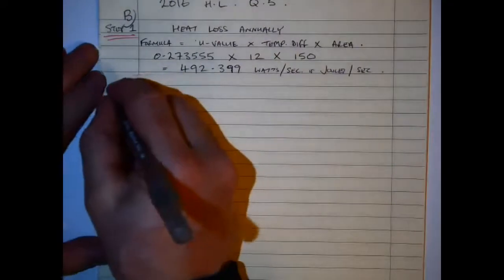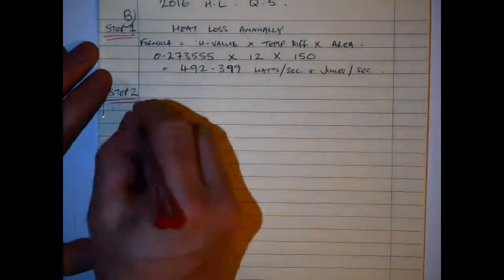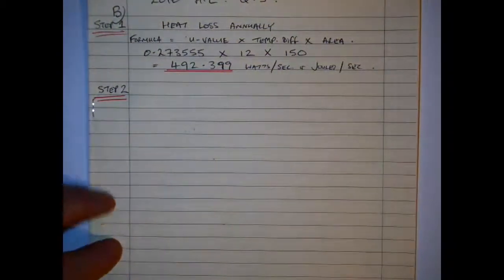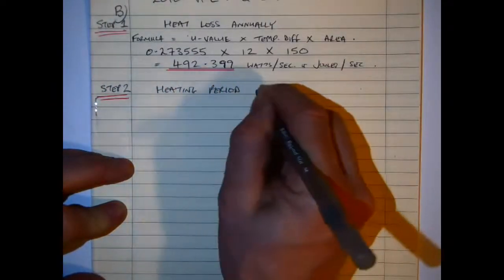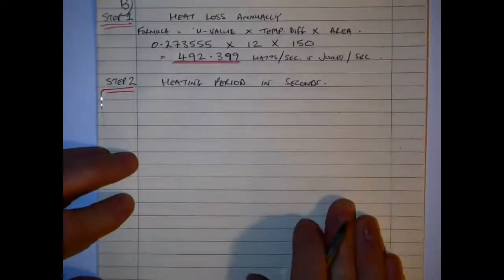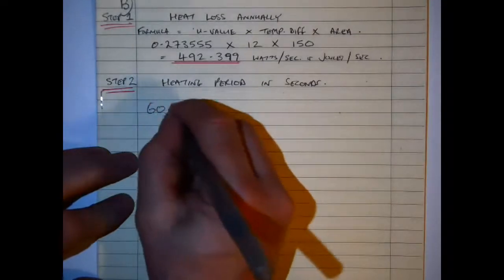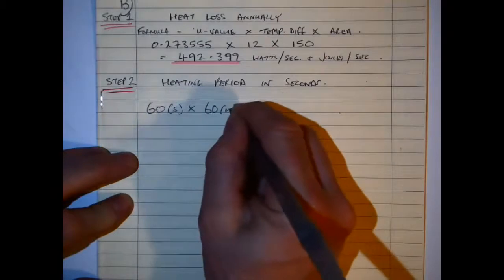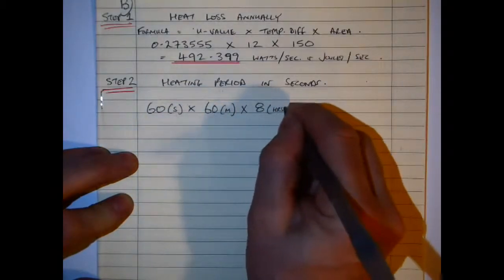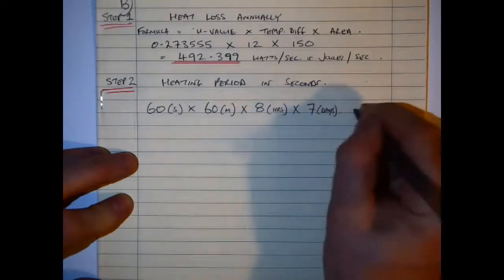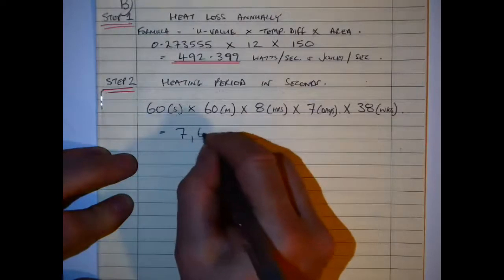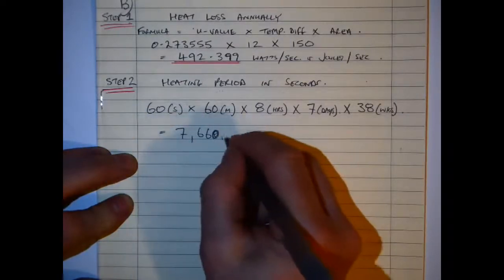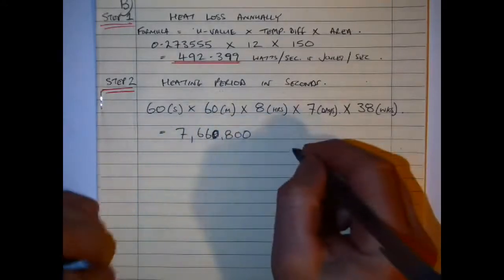This gives us a figure of 492.399 watts, which is joules per second — and that figure is very important for continuing the question. Step 2: we want to calculate the heating period in seconds. So: 60 seconds × 60 minutes × 8 hours × 7 days per week × 38 weeks of the year. Multiplying that out gives a total number of seconds for the heating period of 7,660,800 seconds.